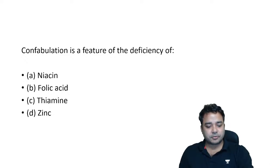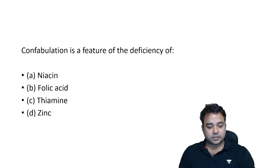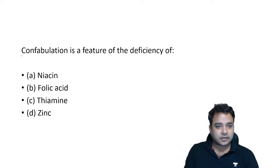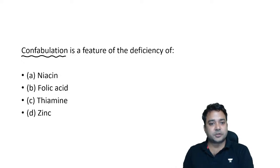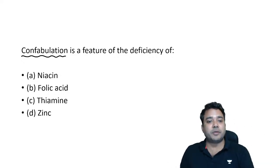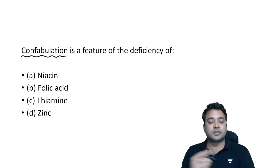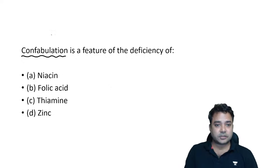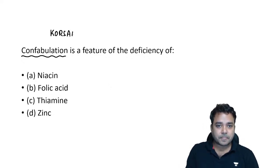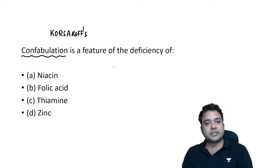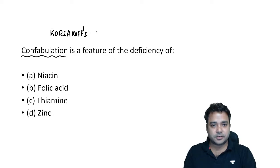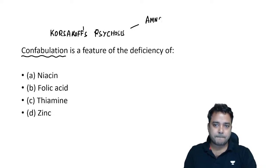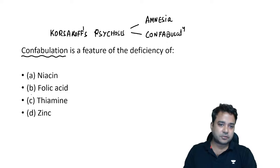This is a straightforward one-liner question. Confabulation means framing or creating false stories by a person to fill memory gaps due to loss of memory. This feature is associated with Korsakoff psychosis, which occurs due to vitamin B1 deficiency in a chronic alcoholic. In Korsakoff psychosis, amnesia occurs and the person tries to fill memory gaps by framing false stories — that is confabulation. The answer goes with amnesia.